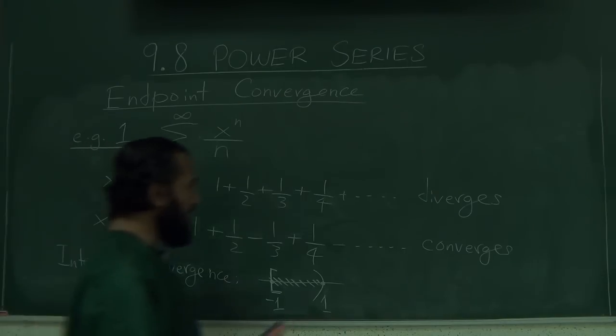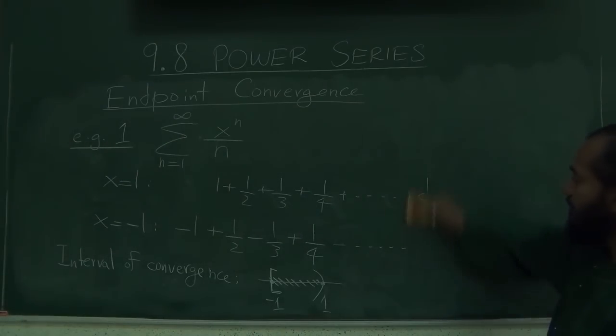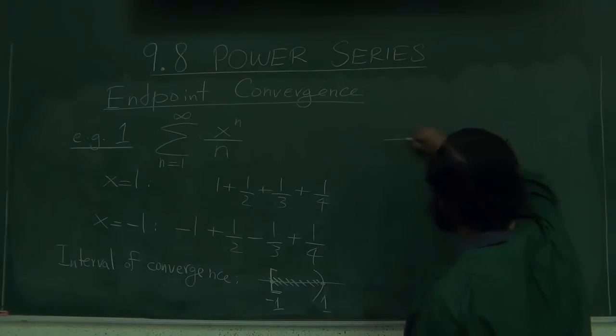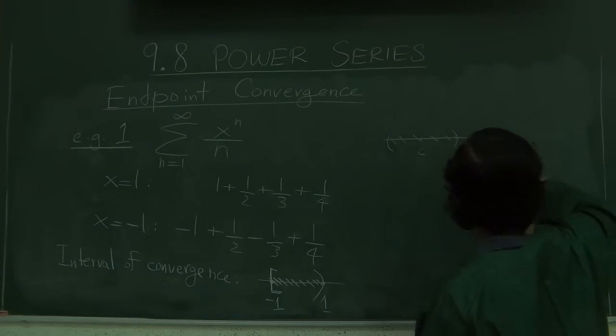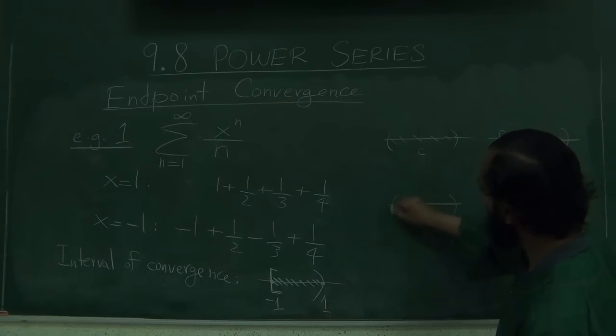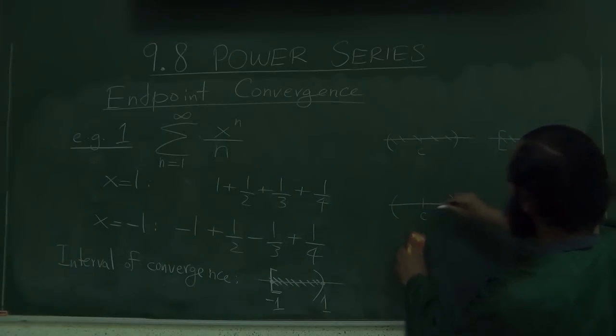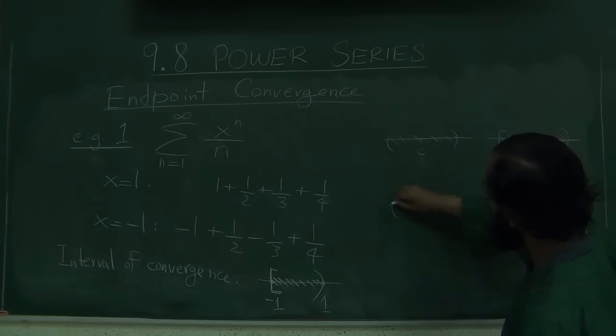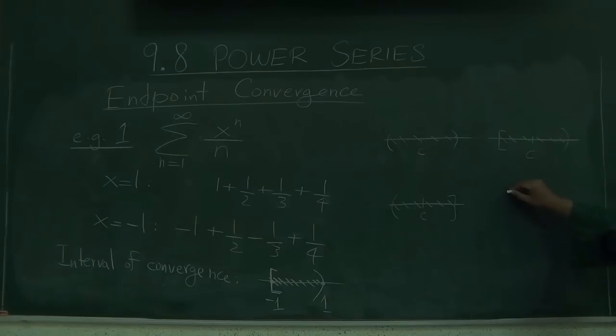So I would like to mention here that all 4 possibilities are possible. In other words, when you have a finite interval of convergence, you could have closed on the left side, open on the right side, you could have closed on the right side and open interval on the left side, and finally you could have closed on both sides, meaning both the endpoints are included. So these are the 4 possibilities of a finite interval.